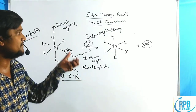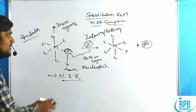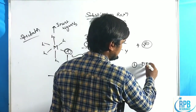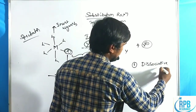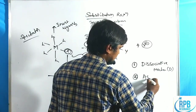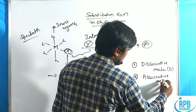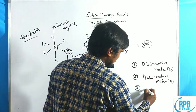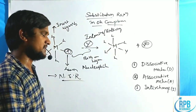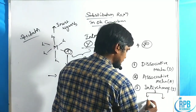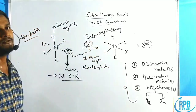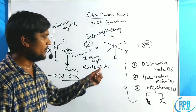The pathways of substitution reactions are generally of three types: first is the dissociative mechanism, denoted as capital D; second is the associative mechanism, denoted as A; and third is the interchange mechanism, denoted as I. The interchange mechanism is further classified into two types: interchange dissociative and interchange associative. In these four manners, nucleophilic substitution reactions occur.